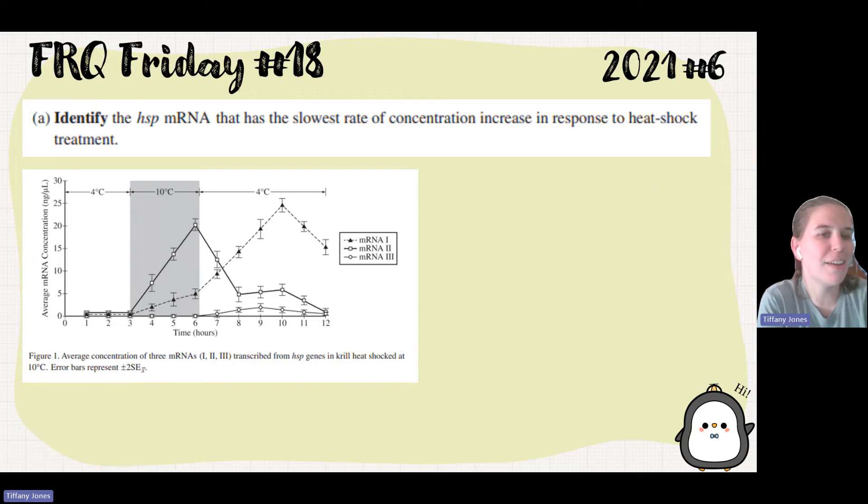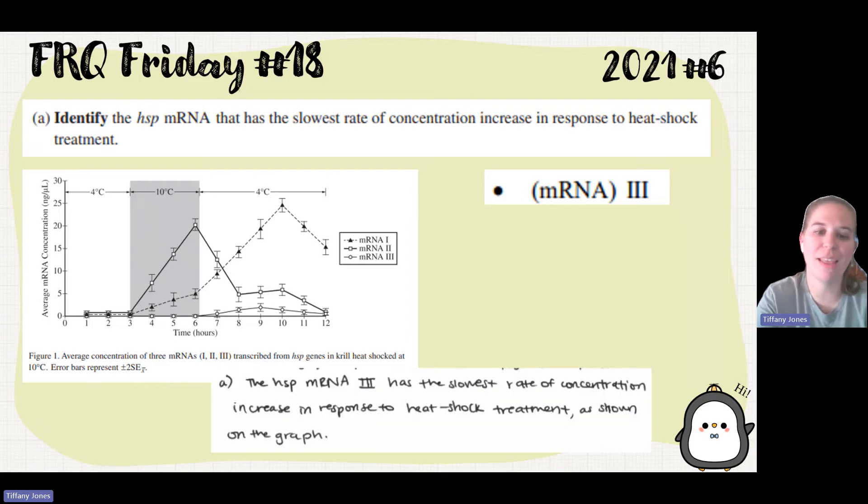So number one says identify the HSP mRNA that has the slowest rate of concentration increase in response to heat shock treatment. So rate is just the change over time. And so you can see here down at the bottom that mRNA 3 has the smallest slope. So it has the slowest rate of increase. So students said the HSP mRNA 3 has the slowest rate of concentration increase in response to heat shock treatment as shown on the graph.